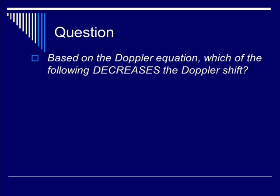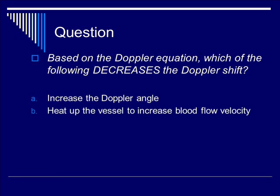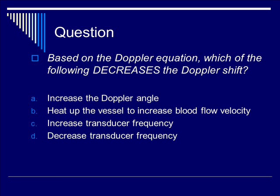Now let's do a question. Based on the Doppler equation, which of the following decreases the Doppler shift? Is it A, by increasing the Doppler angle? Is it B, heat up the vessel to increase the blood flow velocity? Is it C, increase the transducer frequency? Or is it D, decrease the transducer frequency? You may pause the video to consider a response.